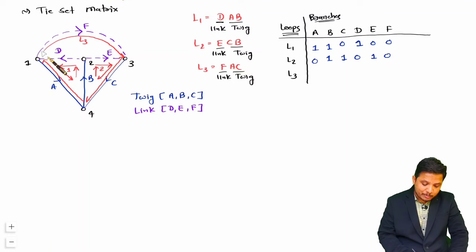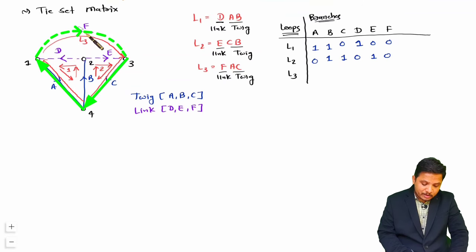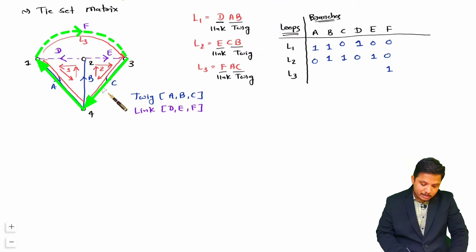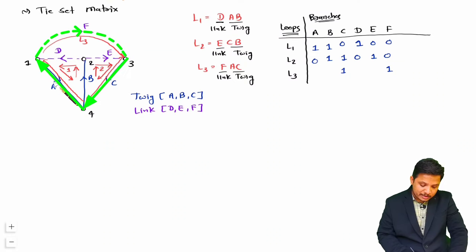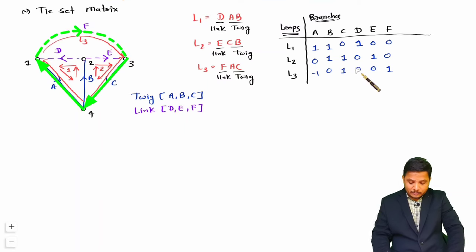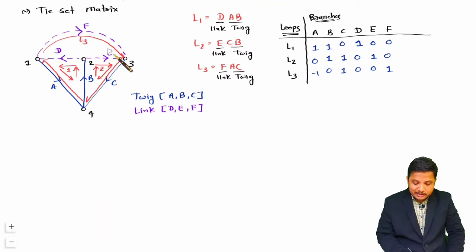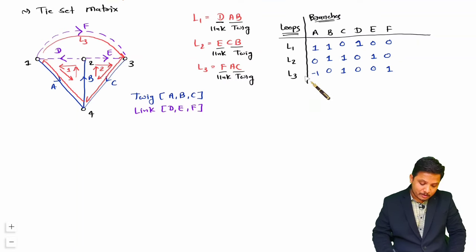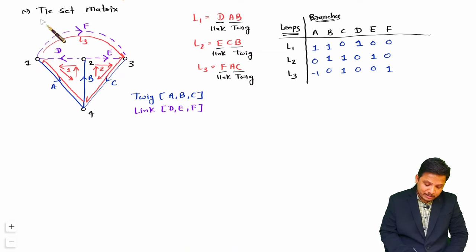For loop L3, the outer loop: F is in the direction of the link so F gets 1; C is in the direction of the loop so C gets plus 1; A is in the opposite direction to the loop so A gets minus 1; and the rest are 0. So if a branch is in the same direction write plus 1, and if in the opposite direction write minus 1. This completes the tie set matrix.